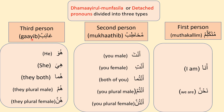Next is third person, which means we are talking about someone in their absence — that someone is the third person. Third person pronouns are: Hua meaning he, Hia meaning she, Huma meaning they both for female and male, Hum meaning they plural for male, and Hunna meaning they plural for female.